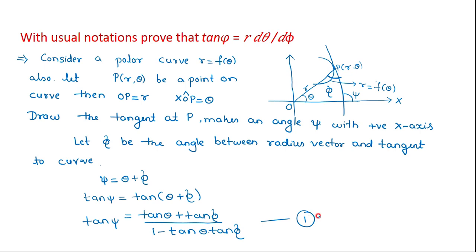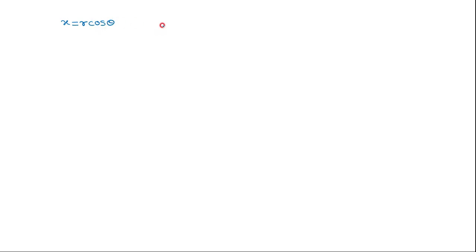Considering the relation between Cartesian form and polar form: x is equal to r cos(theta) and y is equal to r sin(theta). Also, from the geometry, we know that dy/dx is equal to tan(psi). So we will find the derivatives of these parametric equations and equate them with tan(psi).